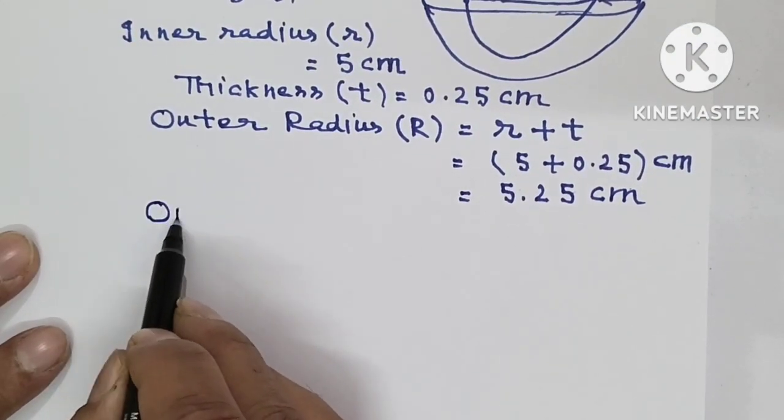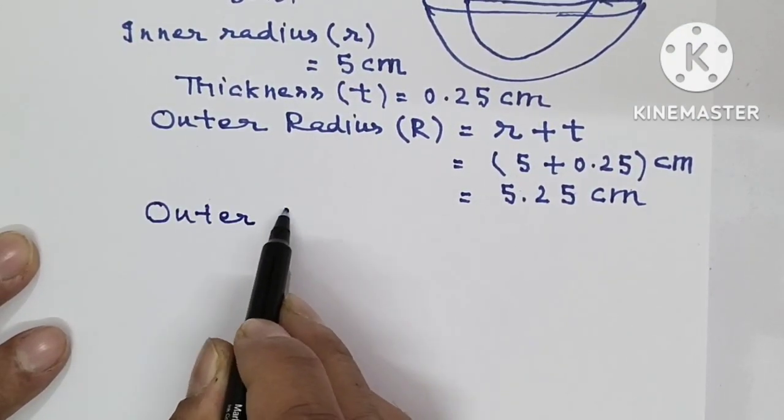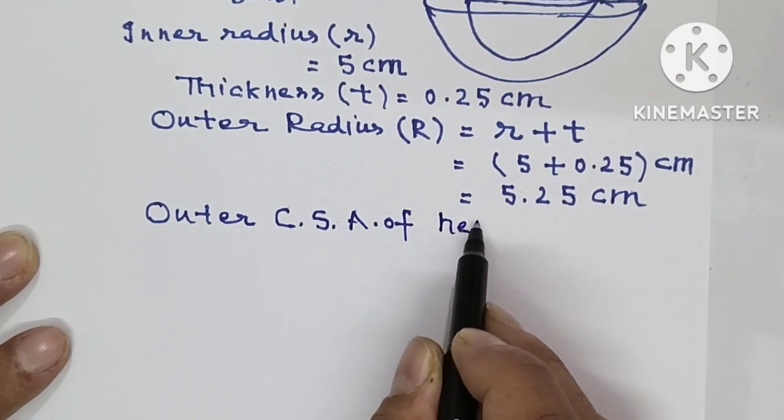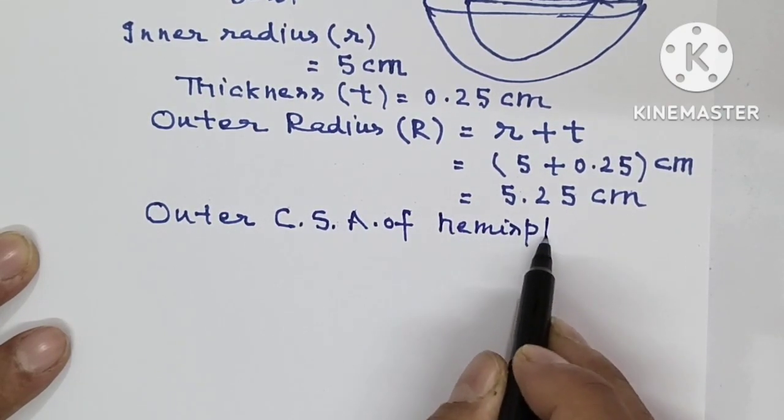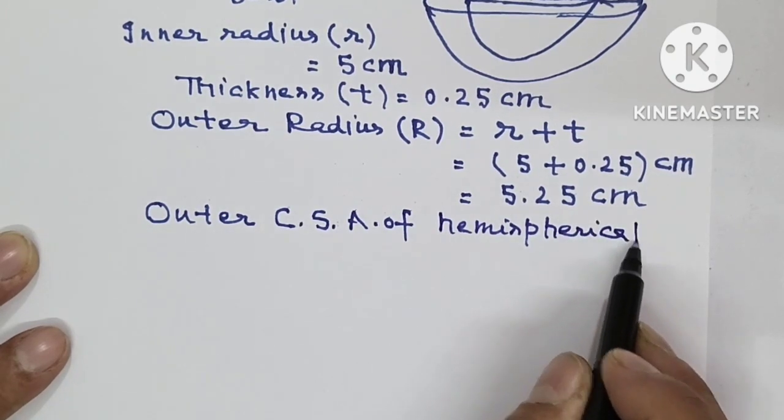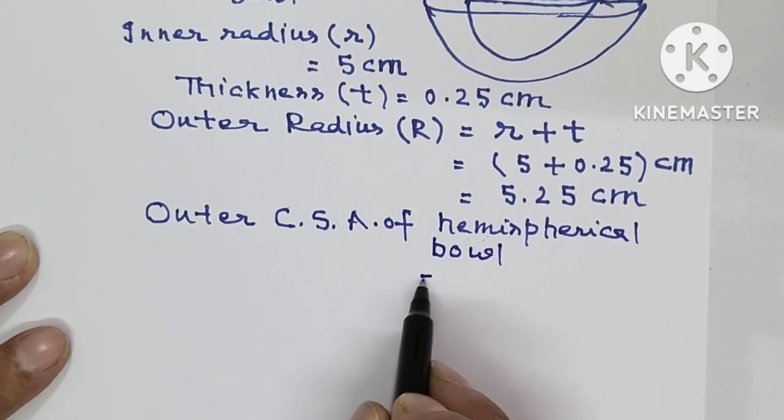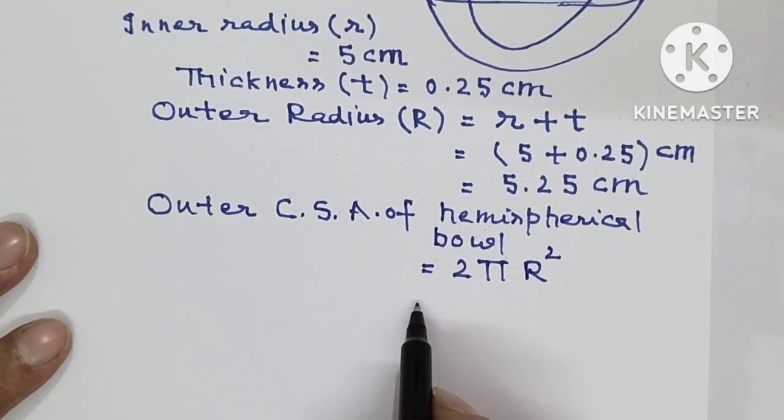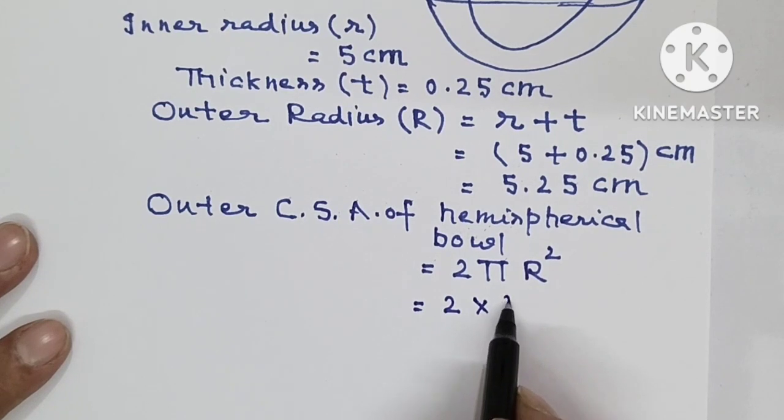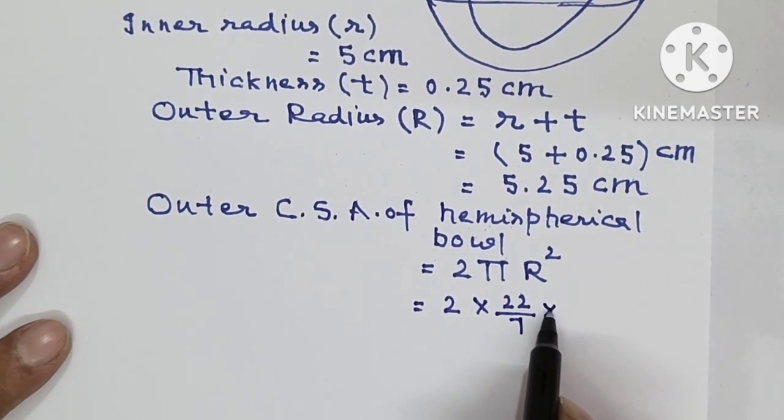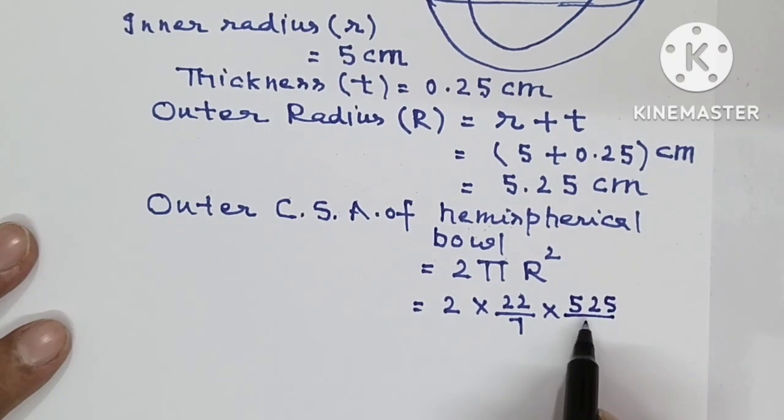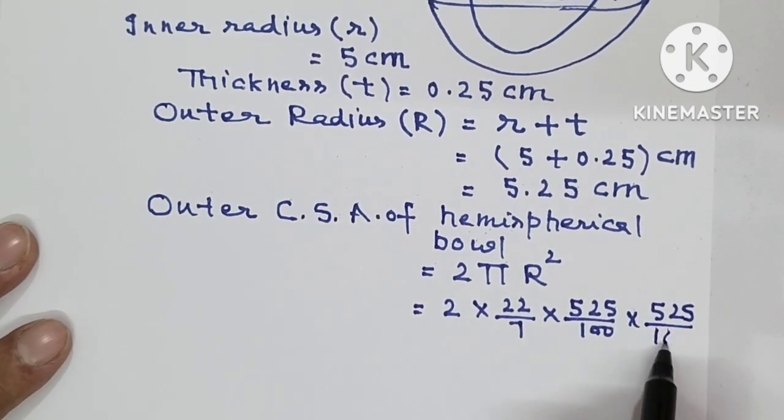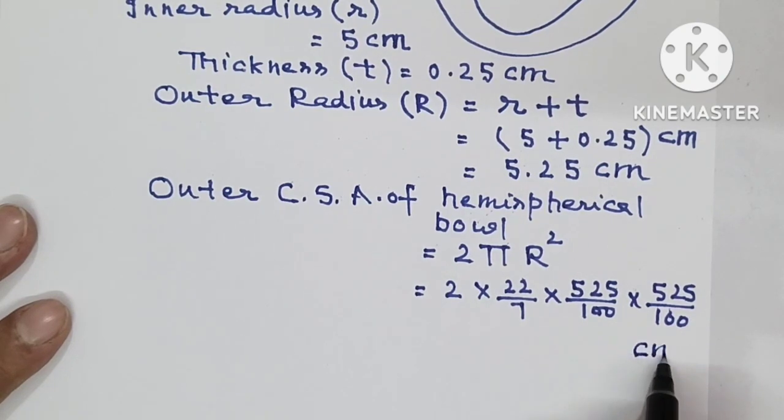Now we will find outer curved surface area of hemispherical bowl. It is equal to 2 pi capital R squared. So it is 2 into 22 by 7 into 525 over 100 squared, which equals 44 into 75 into 525 upon 10000 centimeter squared.